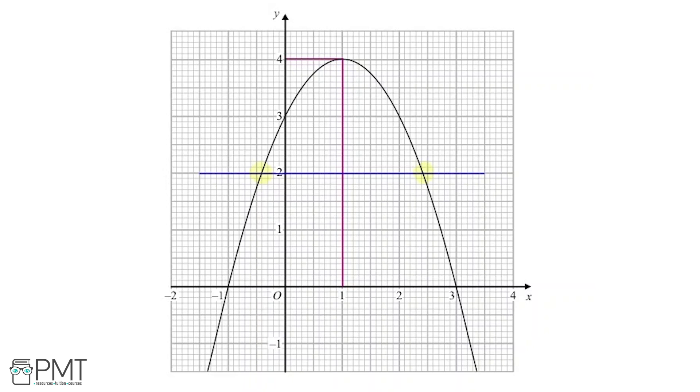Now the roots are the x-coordinates of these points. If we look down here, that's going to be at 2.4. And at this point, if we draw a line down here to see, that is going to be at minus 0.4.